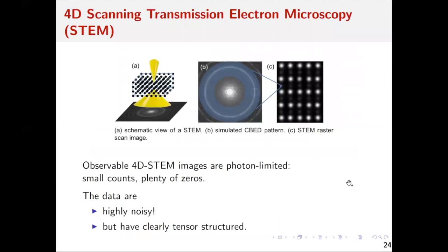Finally, let's move back to the 4D STEM image denoising example mentioned at the beginning. Generally speaking, 4D STEM images are order-4 tensors and are often photon-limited, meaning the images contain many small counts or even zero counts, so the data are highly noisy. But on the other hand, the tensor data have a clear tensor structure because of physical reasons.